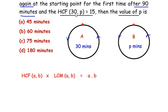Now here HCF of 30 comma p is given as 15 and LCM is given as 90, that is they meet again after 90 minutes, is equal to a we will take it as 30 and b we will take it as p. So we need to find out the value of p.